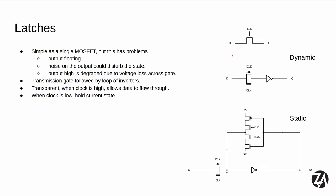Before we can make a flip-flop we need to make a latch. The simplest type of latch is just a MOSFET with data D coming in and Q going out. This allows data to flow through when the clock is high because it's an N-channel MOSFET, but it has a lot of problems: it's not immune to noise on the input, and it's a dynamic circuit, so the output only exists because of capacitance on the wires — meaning that stored value will degrade down to zero over time.